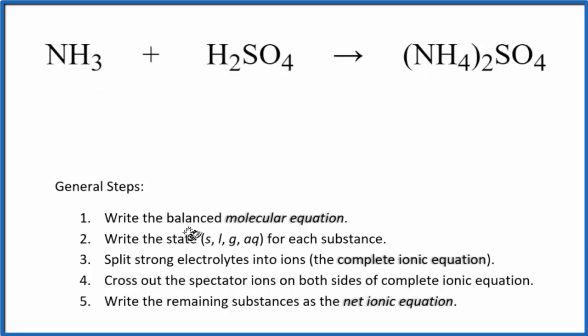First thing with net ionic equations, we need to balance the molecular equation. You can see I have two NH4, two ammonium ions here, so I have two nitrogens. I'm going to have to put a two in front of the NH3, and that balances our molecular equation. Everything adds up.